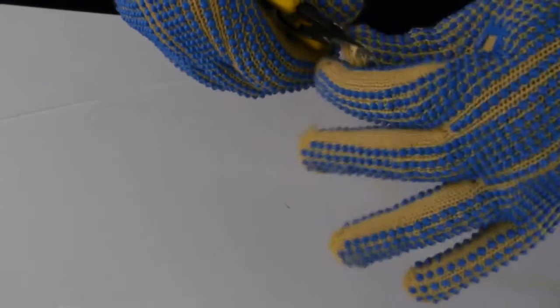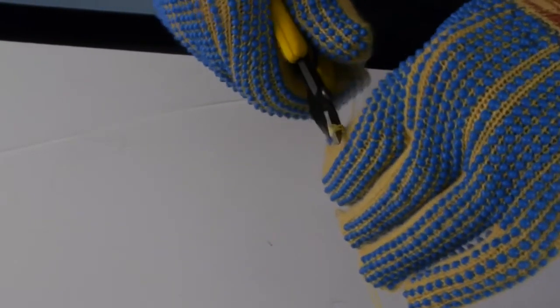With the aramid shears, cut the strength yarns, rip cords, water blocking tape, and binder yarns, leaving about 12 inches of yarns from the end of the jacket.